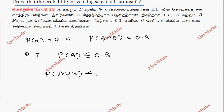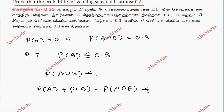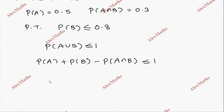Using the addition formula: P(A) + P(B) - P(A intersection B) is less than or equal to 1. Substituting the known values, 0.5 plus P(B) minus 0.3 is less than or equal to 1.